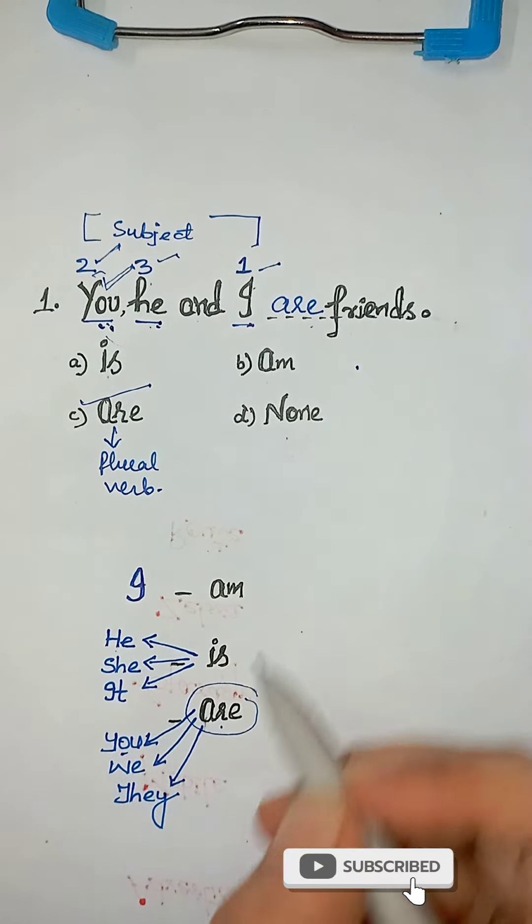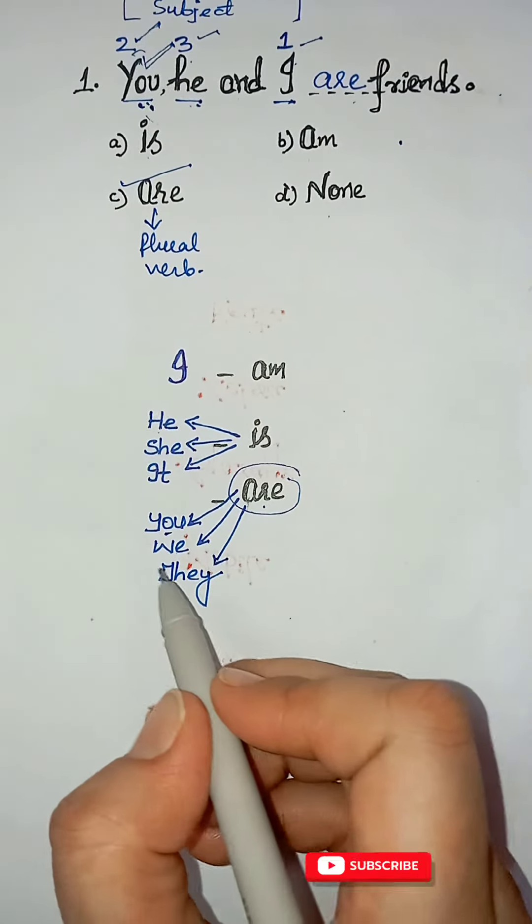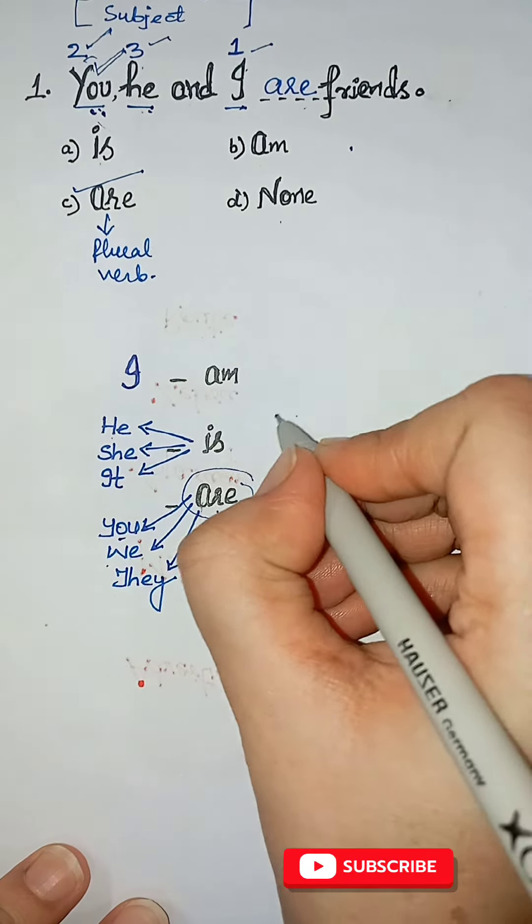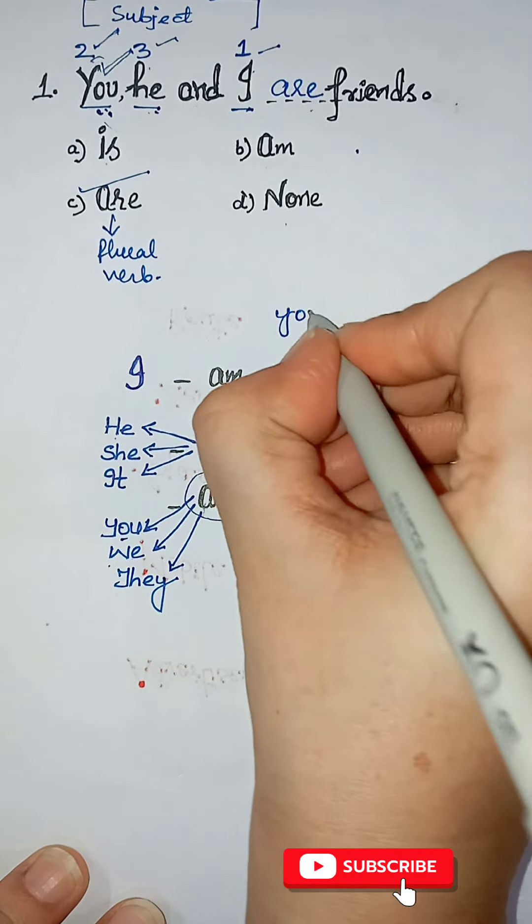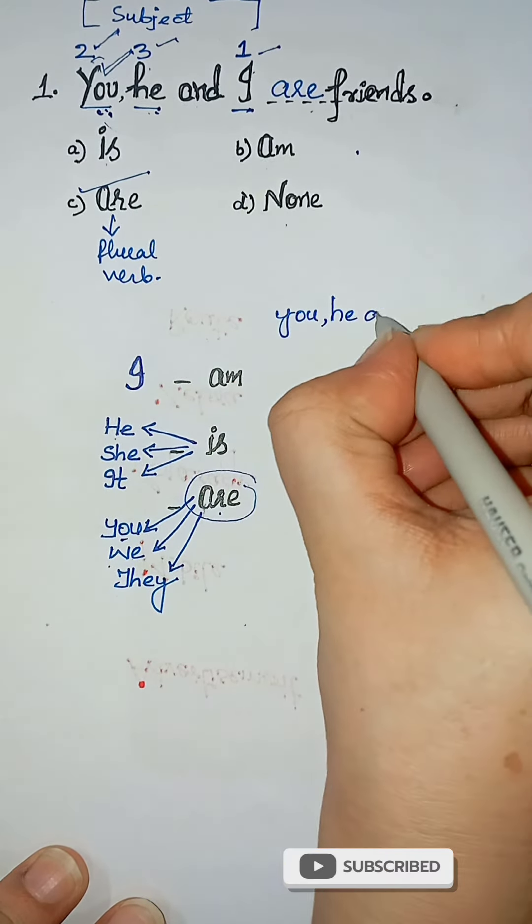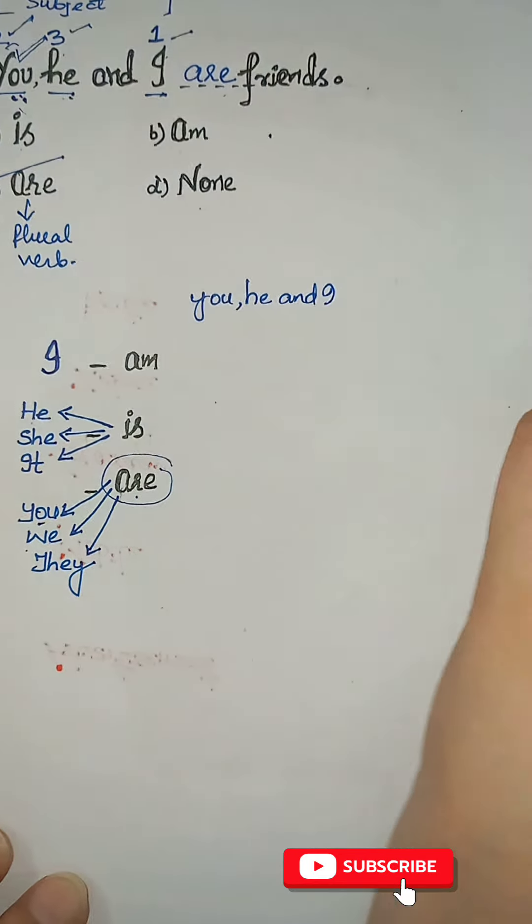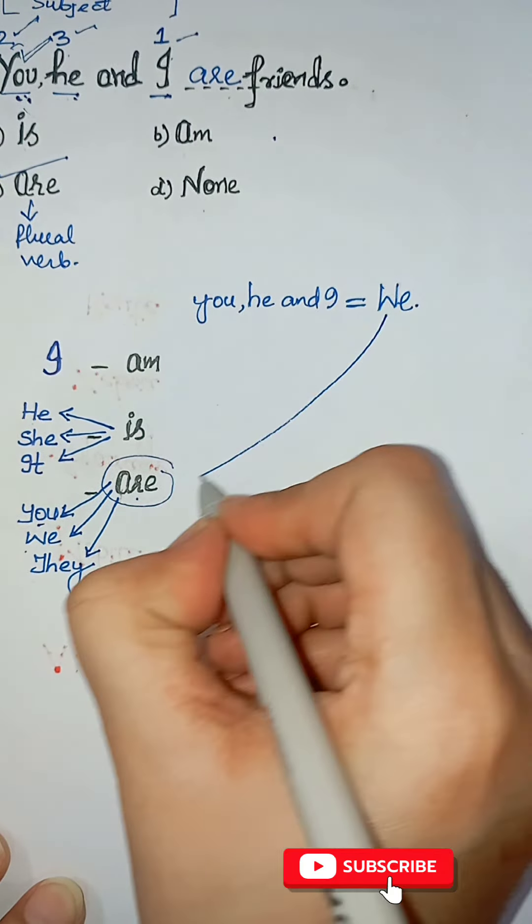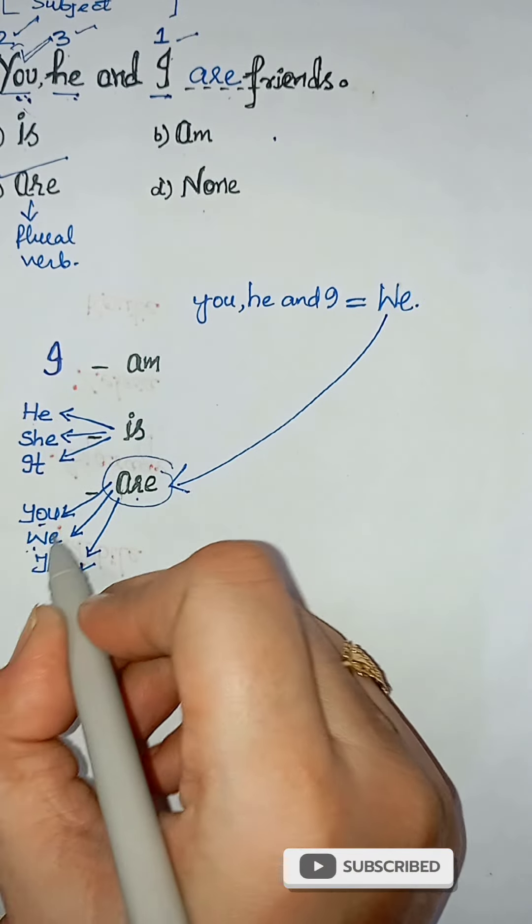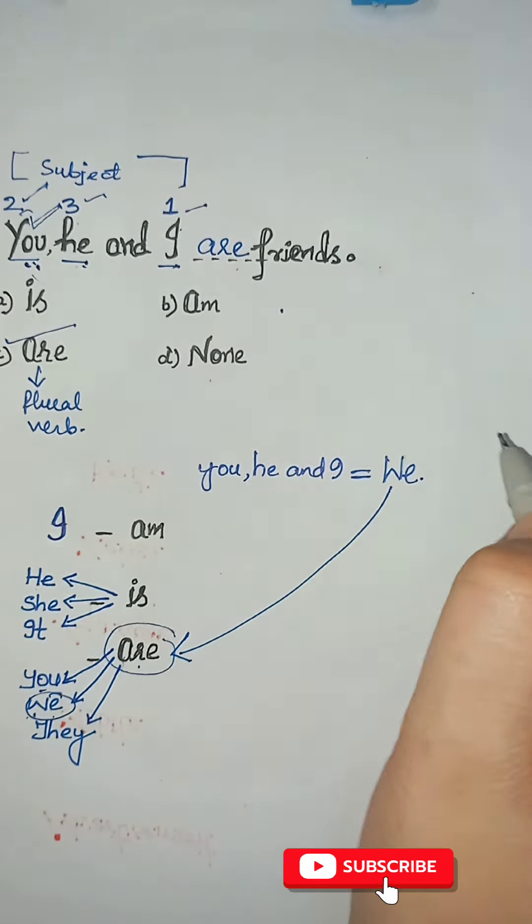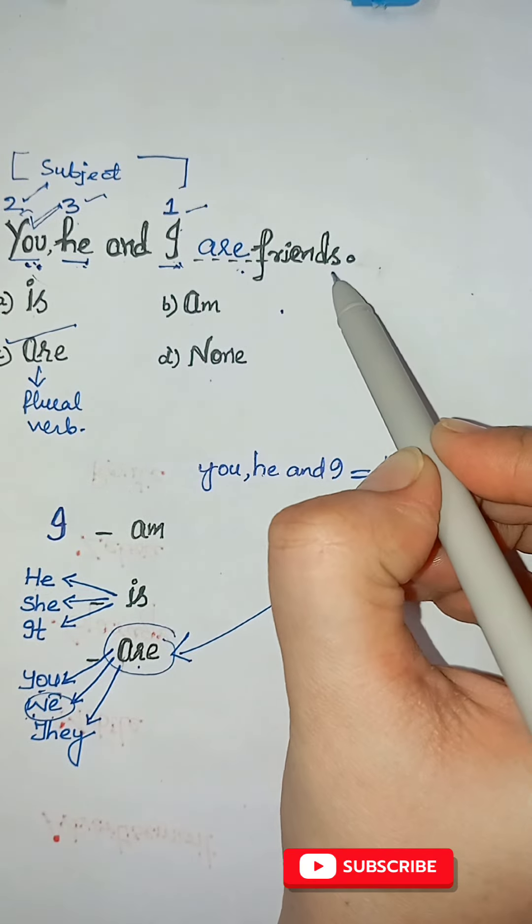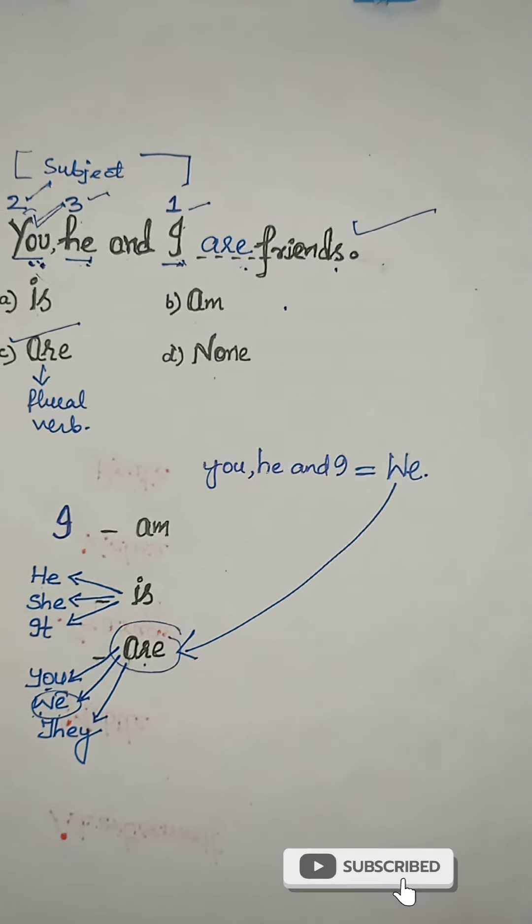Remember guys, you, he and I, whenever they come together, they are we. And we takes are. So you, he, I are friends. You, he and I are friends. Subscribe for more. Thanks for watching.